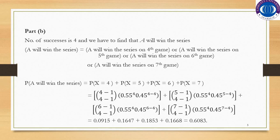We consider all scenarios in which Team A is declared the winner: A wins the series on the 4th game, on the 5th game, on the 6th game, or on the 7th game. Using the probability mass function, we substitute P(X=4), P(X=5), P(X=6), and P(X=7) and sum these probabilities.